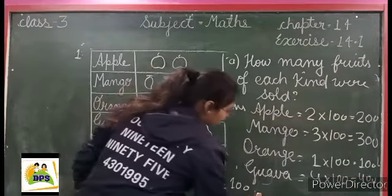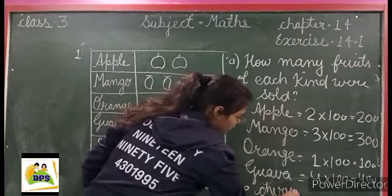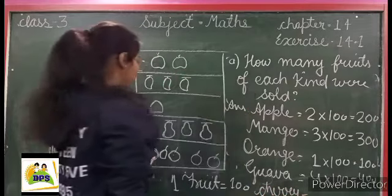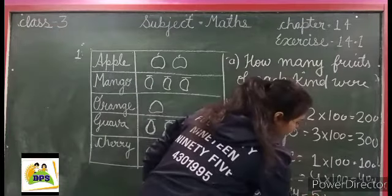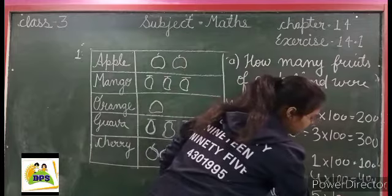Next is cherry. Cherry: one, two, three, four, five. Five. Each fruit equals 100, so five multiply 100 equals 500.